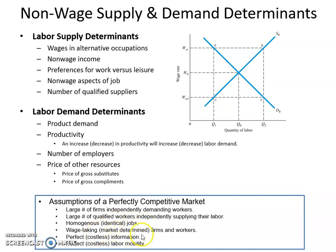Firms and workers are wage-taking and market-determined. Firms would always want to pay a lower wage and workers would always want to receive a higher wage, but what they get is the market wage determined by supply and demand. There is perfect, costless information — workers know everything about the firm they need to make the labor supply decision, and firms know everything about the workers they need to make the labor demand decision. There is perfect, costless labor mobility — there is no cost to taking a job in L.A., New York, or Bangkok. Labor mobility is 100% free.